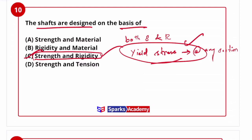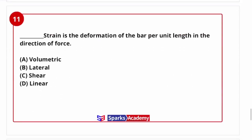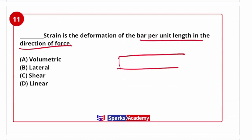Next: strain is defined as the deformation of a bar per unit length in the direction of force. We can have volumetric strain, shear strain, or linear strain. Since force is applied along the bar direction and deformation is per unit length along that direction, this is linear strain.